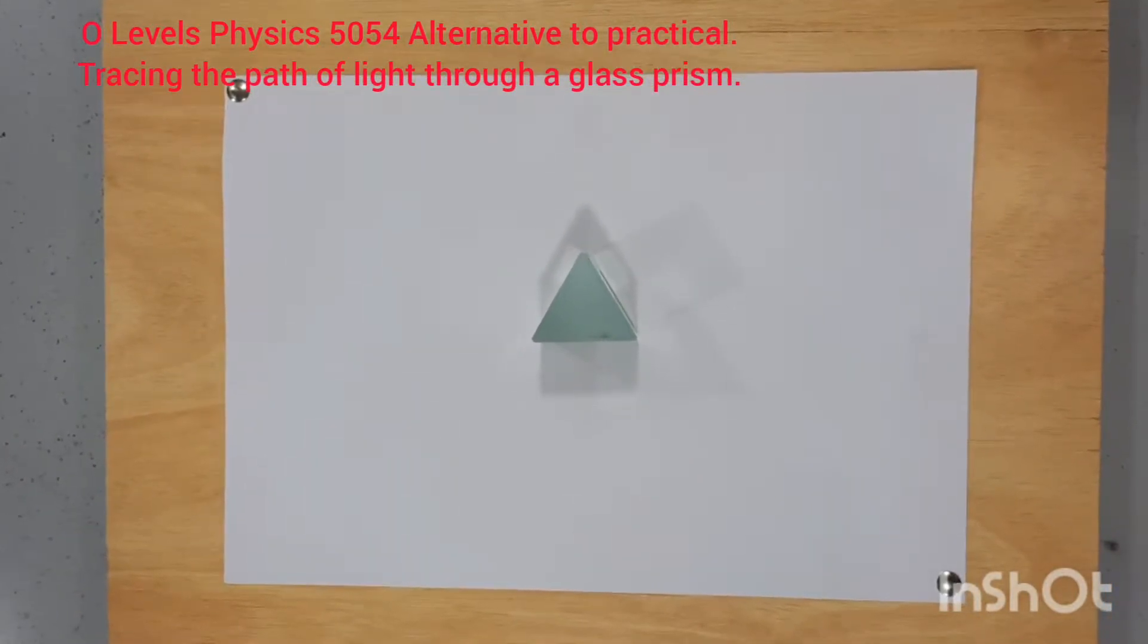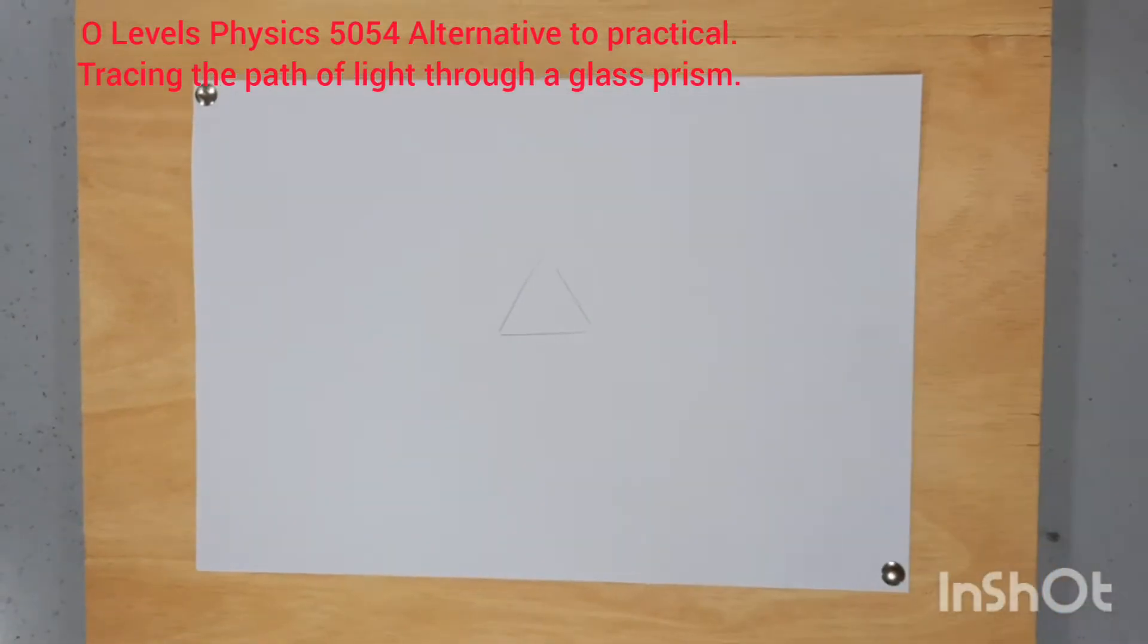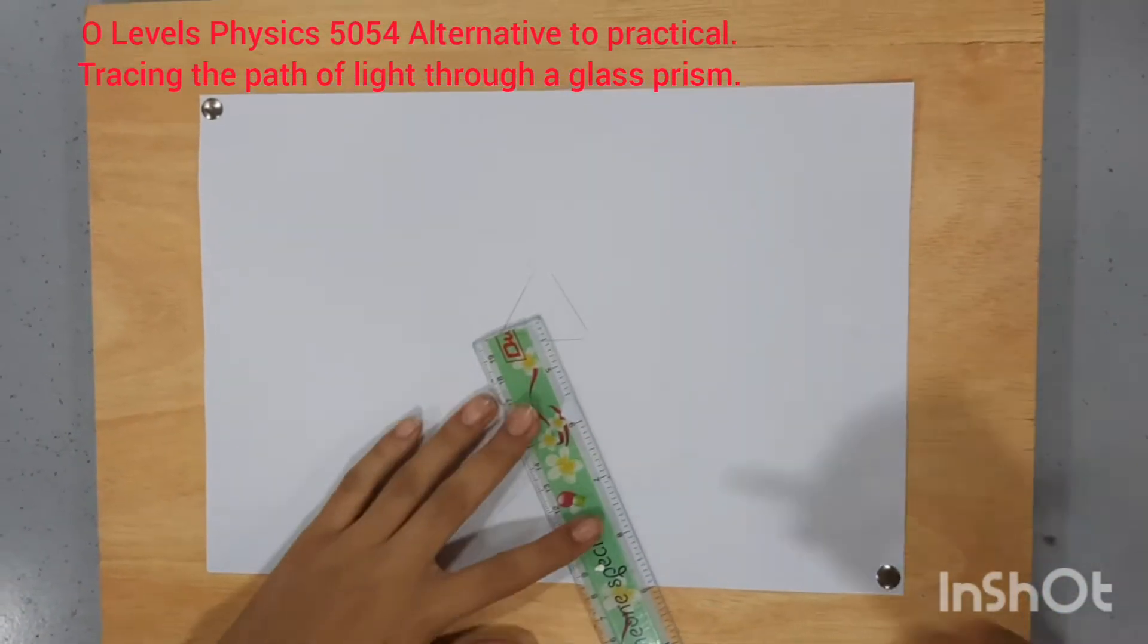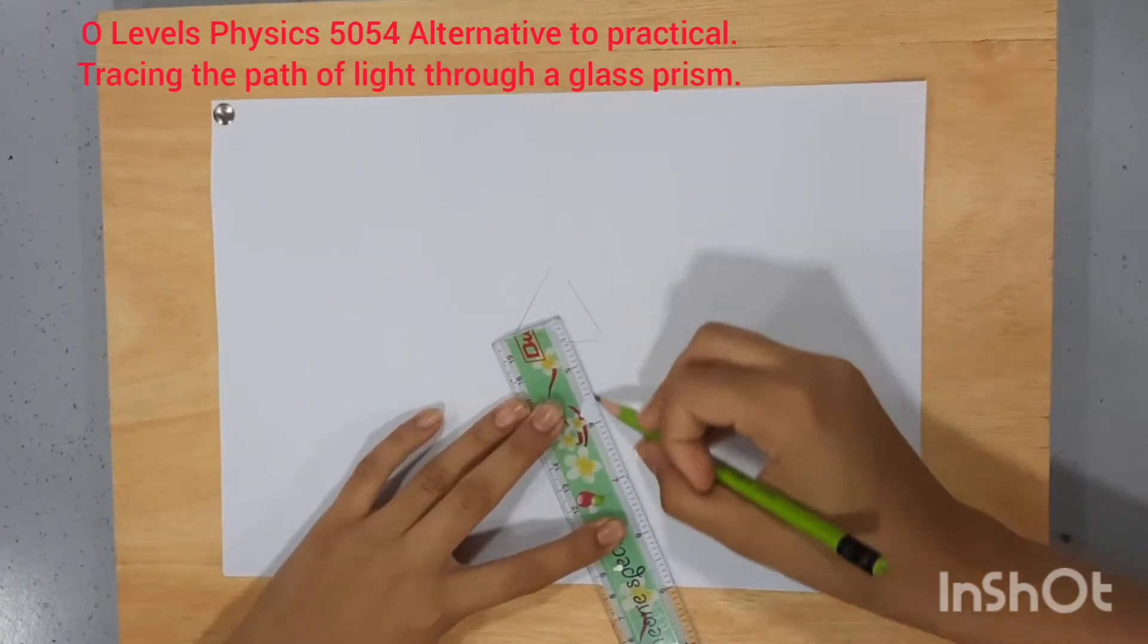After marking the boundary, remove the prism and on one of the faces, draw a straight line which makes an acute angle with that face.